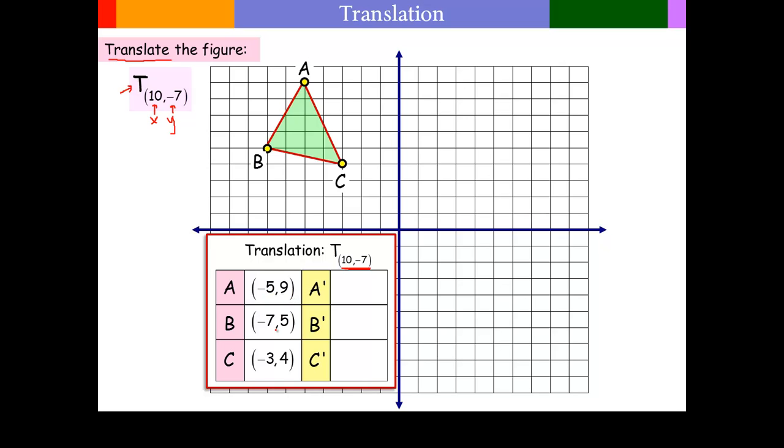I'm going to put the coordinates of these points. Notice A is just a negative 5, 1, 2, 3, 4, 5, and then a positive 9. That gets us up to here at negative 5, 9. So the translation here, this 10 means I'm going to go in the X direction, a positive 10.